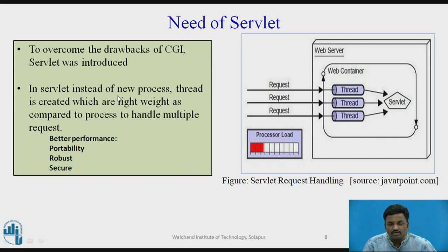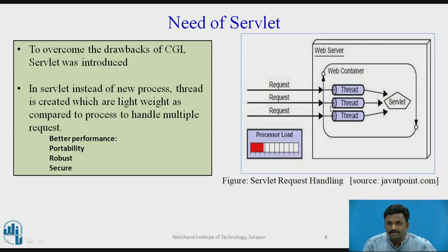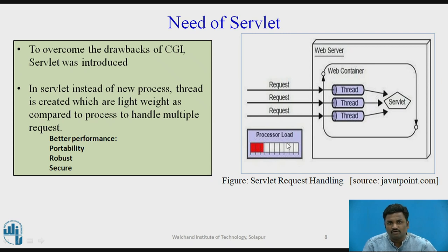The drawback of CGI is overcome in servlet. When a request comes, instead of creating a new process, it will create a thread. We know that threads are lightweight. So servlet works on the principle of threading. It creates a thread and provides a response for each request. The processor load is reduced drastically — this is the advantage of using servlet. The advantages are: better performance, portability, robustness, and security.